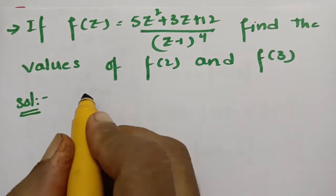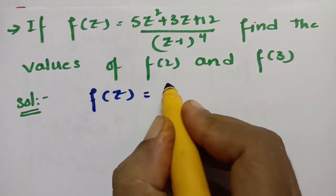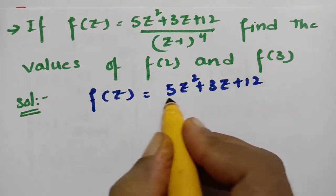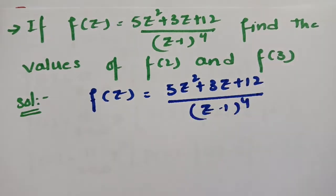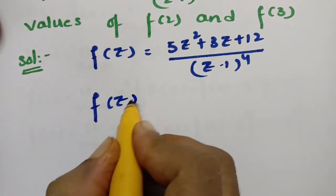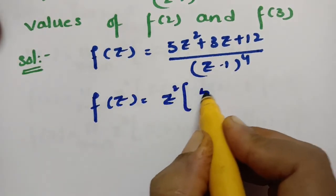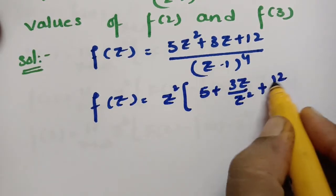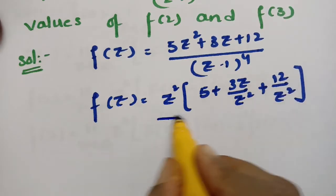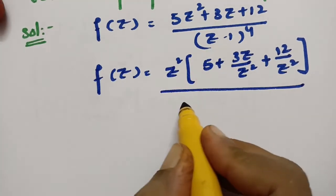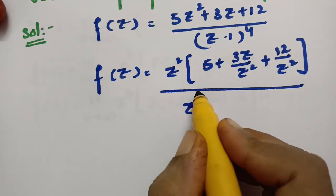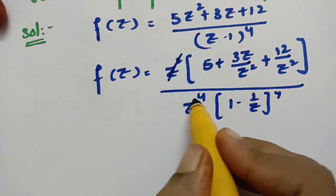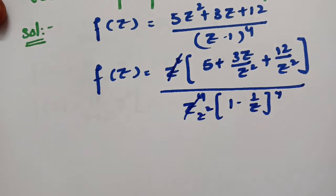F(z) is given as (5z² + 3z + 12) / (z − 1)⁴. Taking z² common from the numerator gives (5 + 3/z + 12/z²), and taking z⁴ common from the denominator gives z⁴·(1 − 1/z)⁴, leaving z² after cancellation.